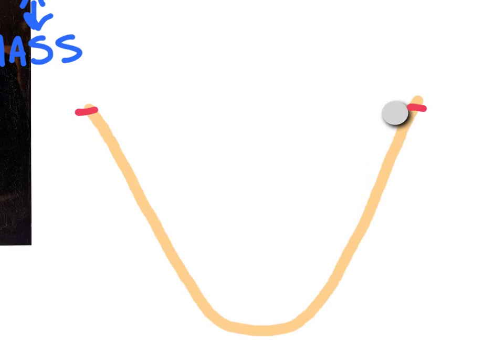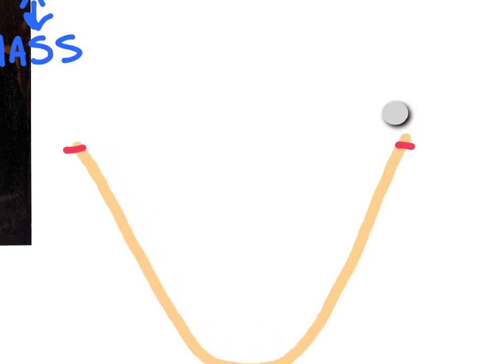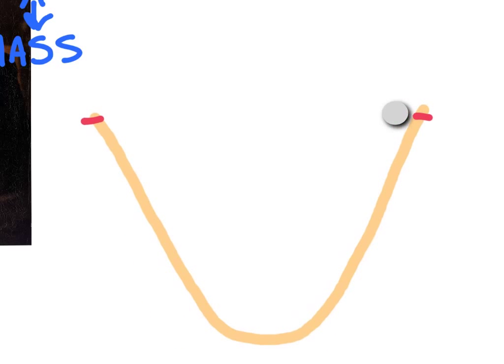What he noticed is that the smoother he could make his ramp, the closer the ball would get to moving back to the top of the ramp, being at the same height. He came up with a theory that if he could completely remove all friction, which he thought was the force opposing the motion of that ball, it could essentially just keep on moving up and down forever and never stop.